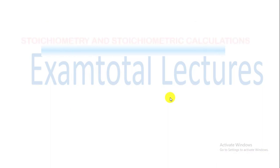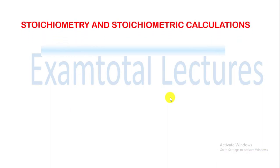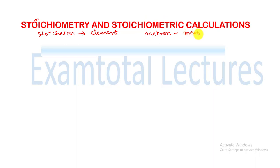What is stoichiometry? The word stoichiometry is derived from two Greek words. The first word means 'element' and the second word is 'metron' which means 'measure' — so you have to measure the element. Stoichiometry deals with the calculation of masses, and sometimes volumes, of the reactants and products involved in a chemical reaction.